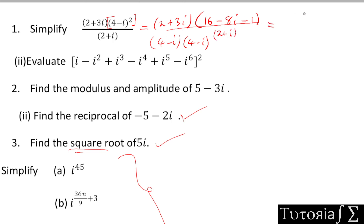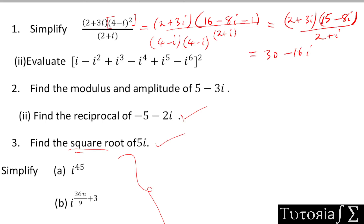When simplified on top we have (2 + 3i) multiplied by (15 - 8i) all over (2 + i). Expanding the numerator: 2 times 15 is 30, then -16i, plus 45i, then -3 times -8 gives us -24, and i times i is i², which is -1, so -1 times negative gives us positive 24, all over (2 + i).